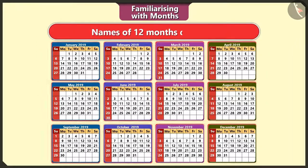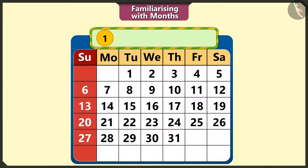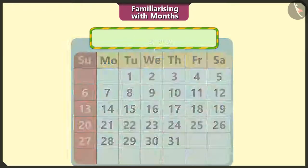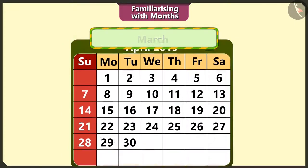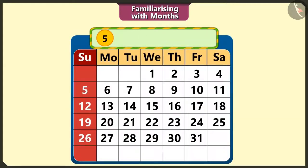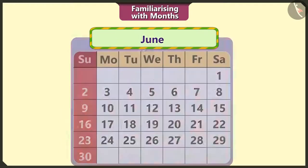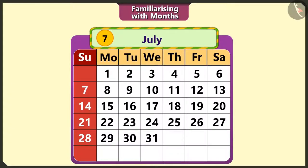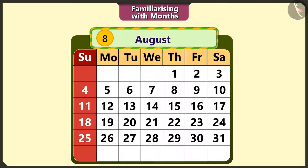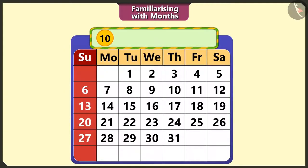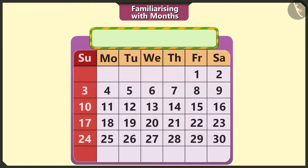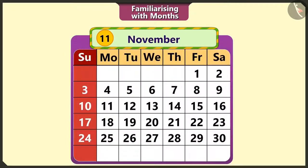There are 12 months in a year. These are: 1st January, 2nd February, 3rd March, 4th April, 5th May, 6th June, 7th July, 8th August, 9th September, 10th October, 11th November, and 12th December.